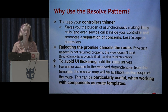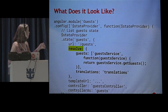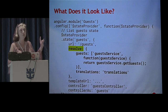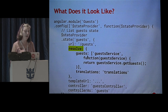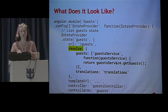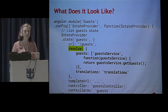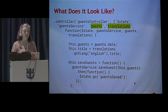It's also for easier access to those dependencies from the template — it's available on the scope of the route. This is particularly useful when working with components as route templates. So what does it look like? It's very simple. This is an example using UI router; using ng-route looks very similar, especially the resolve part of the object. In this example I have an object called 'guests' that is calling a guest service and returning what comes back from getGuests.